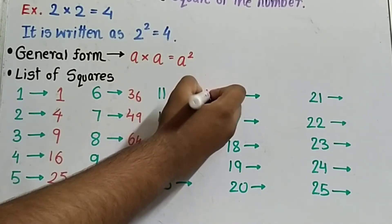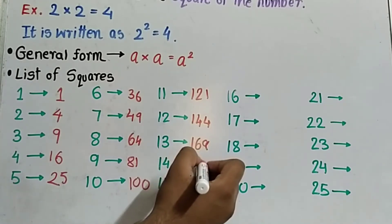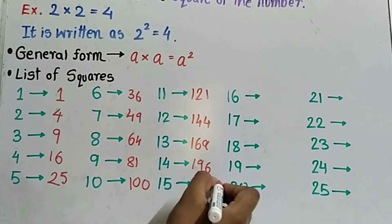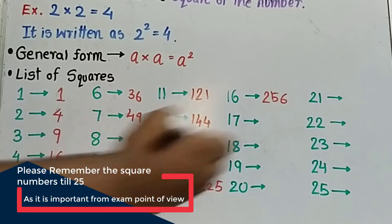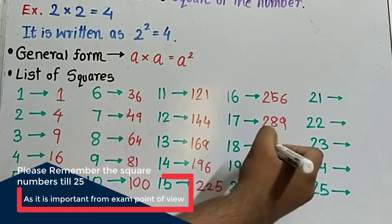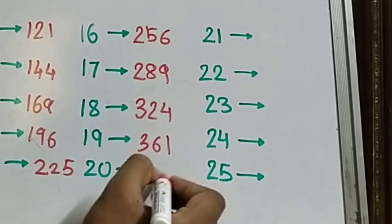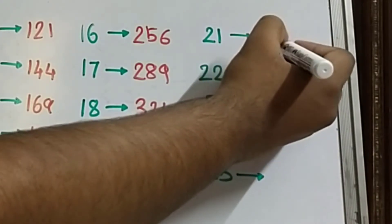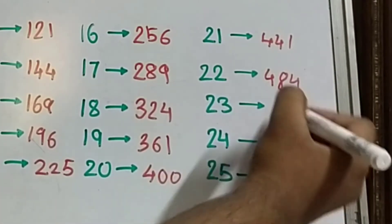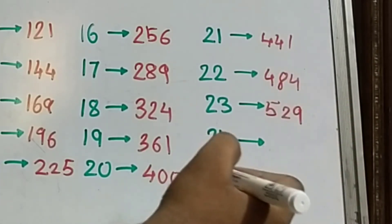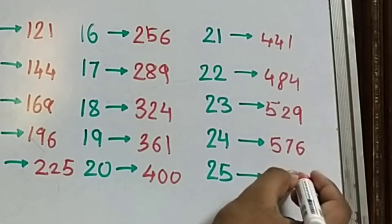Continuing the list: square of 11 is 121, 12 is 144, 13 is 169, 14 is 196, 15 is 225, 16 is 256, 17 is 289, 18 is 324, 19 is 361, 20 is 400, 21 is 441, 22 is 484, 23 is 529, 24 is 576, and 25 is 625. These are the squares we should know.